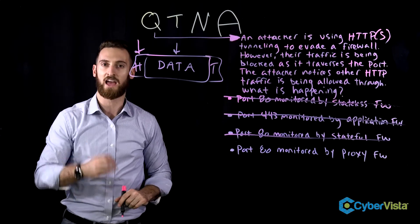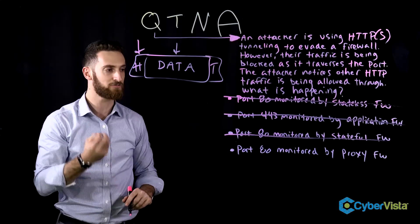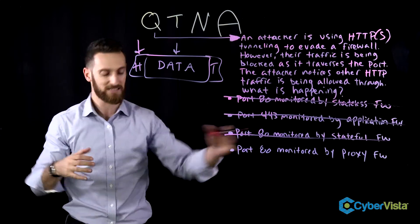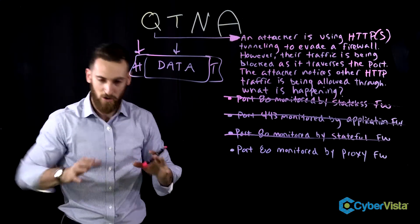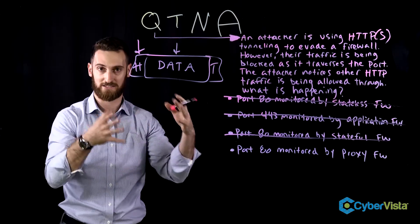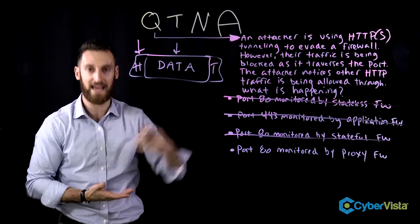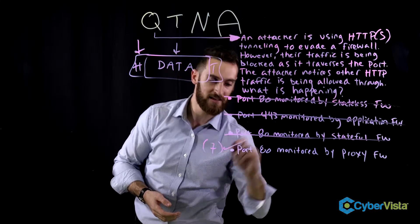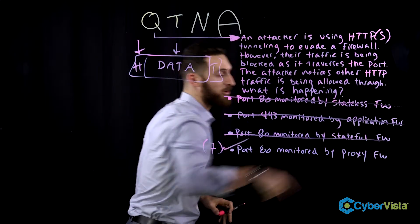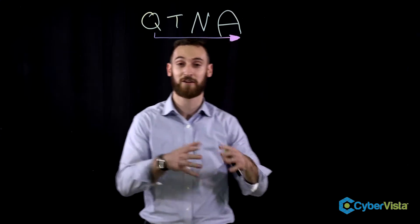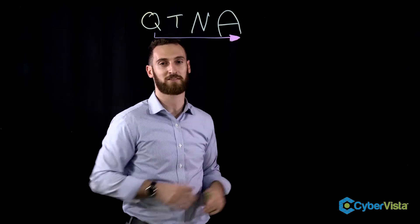That leaves us with the last one: proxy. A proxy firewall is an extremely intelligent firewall that can inspect the data and the traffic. Think of it like very intense TSA agents who actually open your bag — something called, in the security world, deep packet inspection. It can look at the packet, look at the data, and make a decision based on that. This operates at layer seven, so that's why it makes sense. An application firewall would have worked as well, but we already eliminated that option because it was paired with port 443 — a great number, but the wrong port.